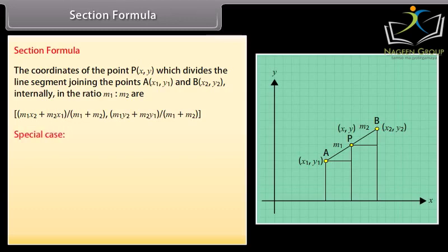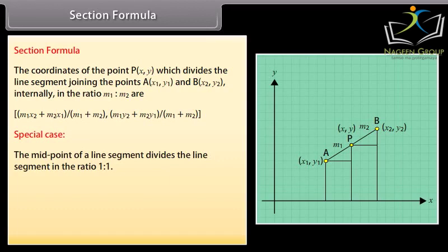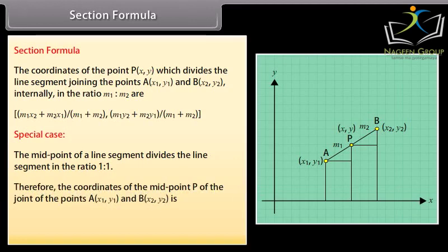Special case. The midpoint of a line segment divides the line segment in the ratio 1 is to 1. Therefore, the coordinates of the midpoint b of the joint of points a, x1, y1 and b, x2, y2 is x1 plus x2 by 2, y1 plus y2 by 2.